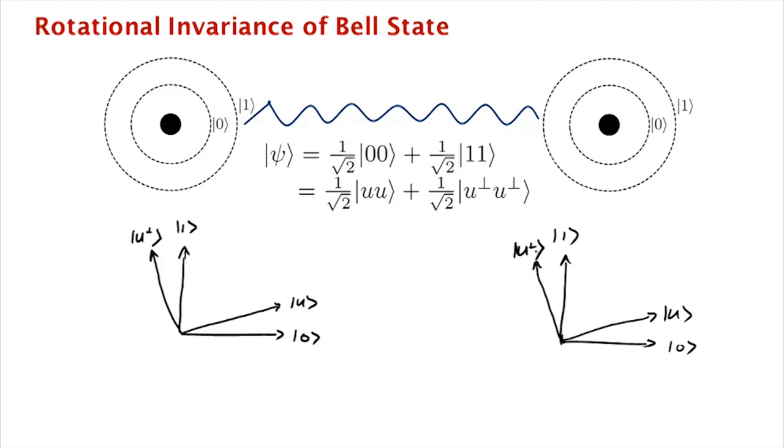So now what we are saying is if you were to write each of these qubits in the basis u, u perp, and now if you were to express the Bell state in this u, u perp basis,